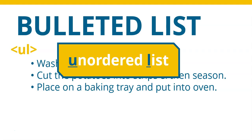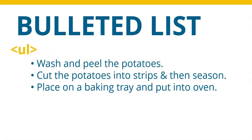So you use the UL tag at the top, and then you need to specify when the whole list — not each item — when the whole list ends. That's why we will have a close UL tag right at the bottom of our list. So that defines when the list starts and when the list ends.